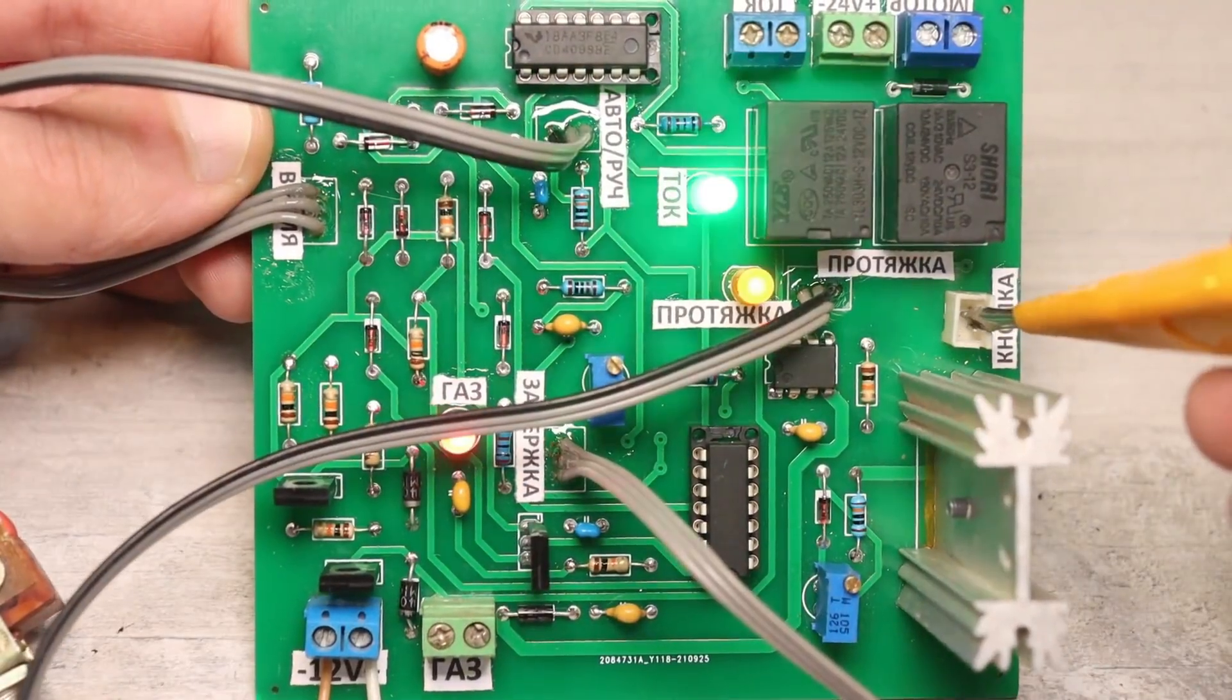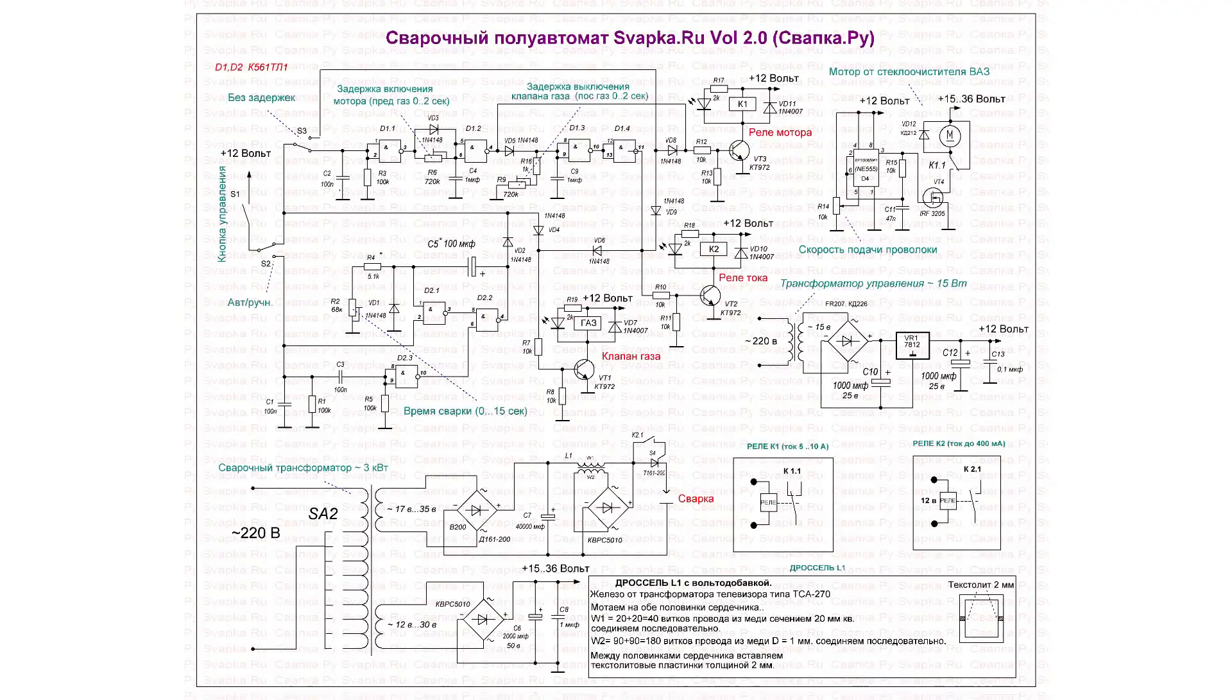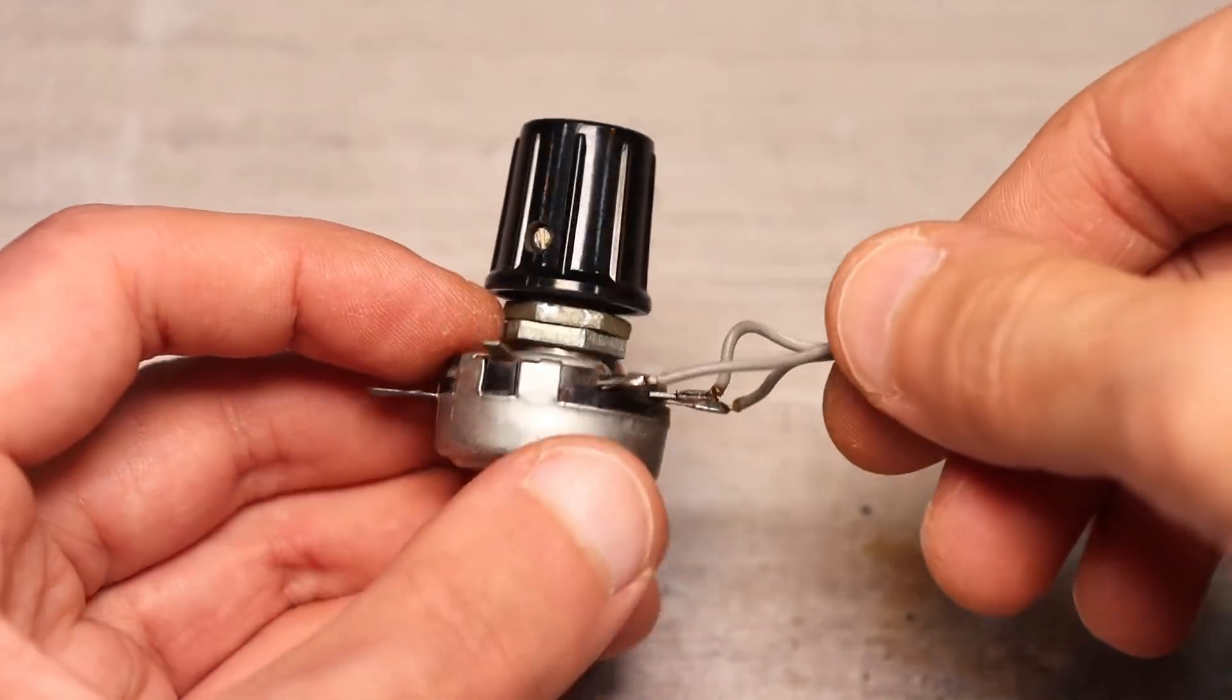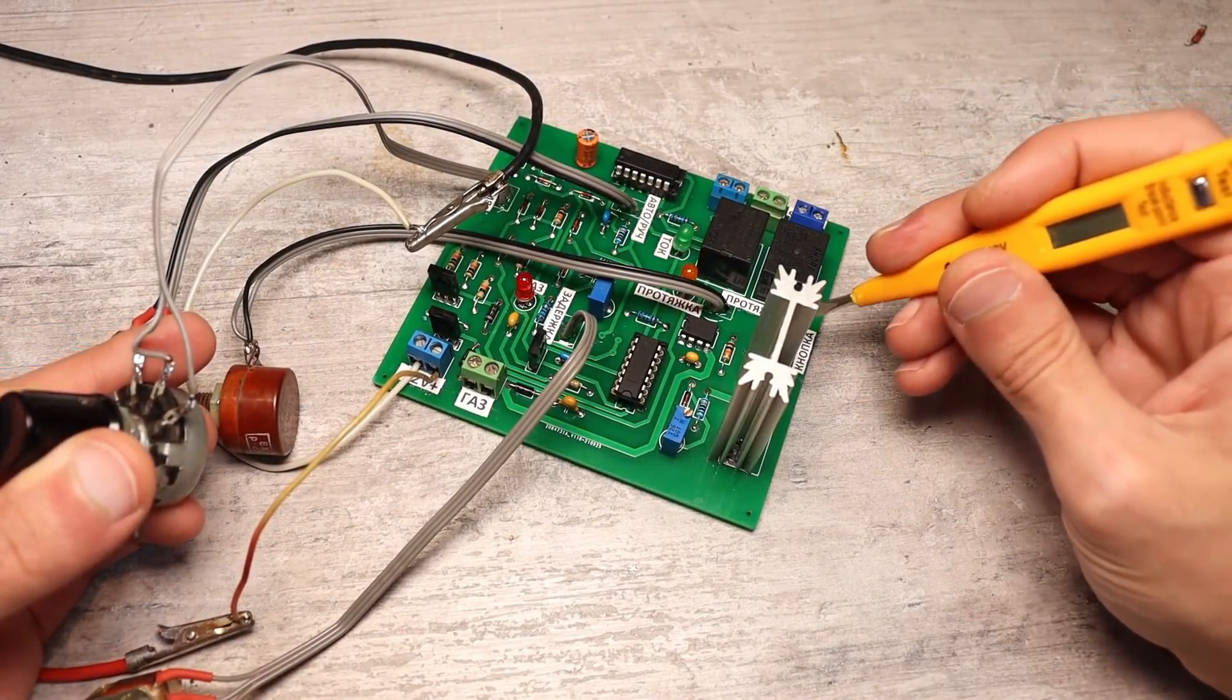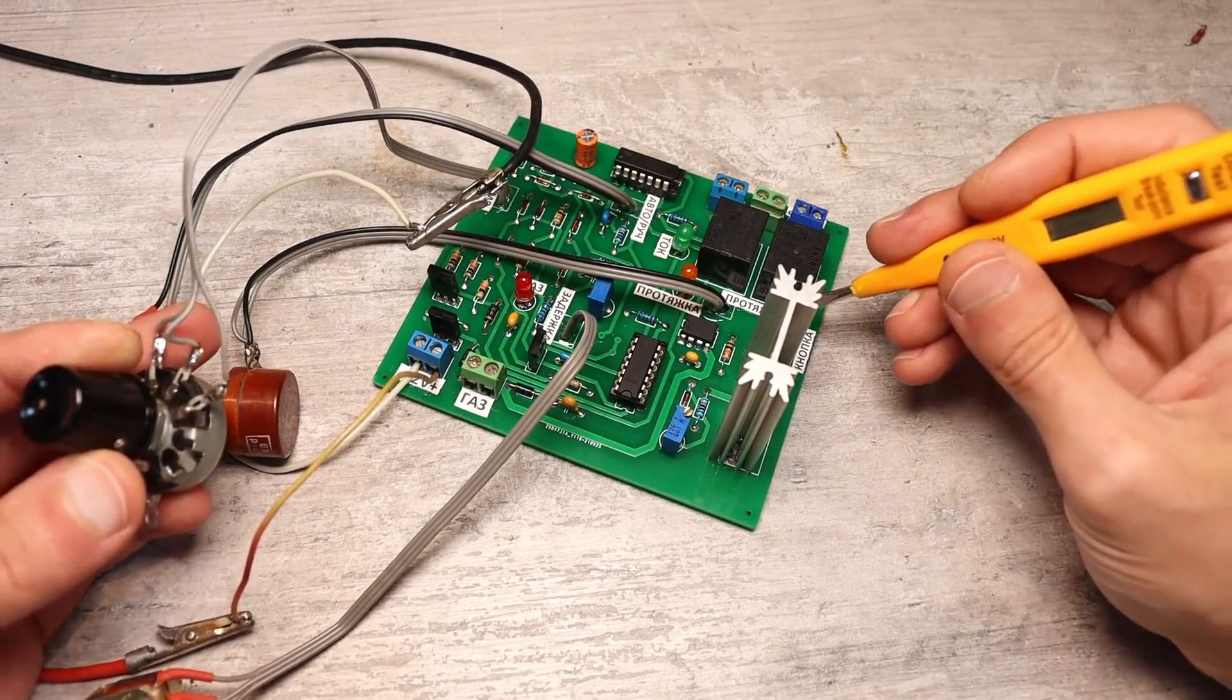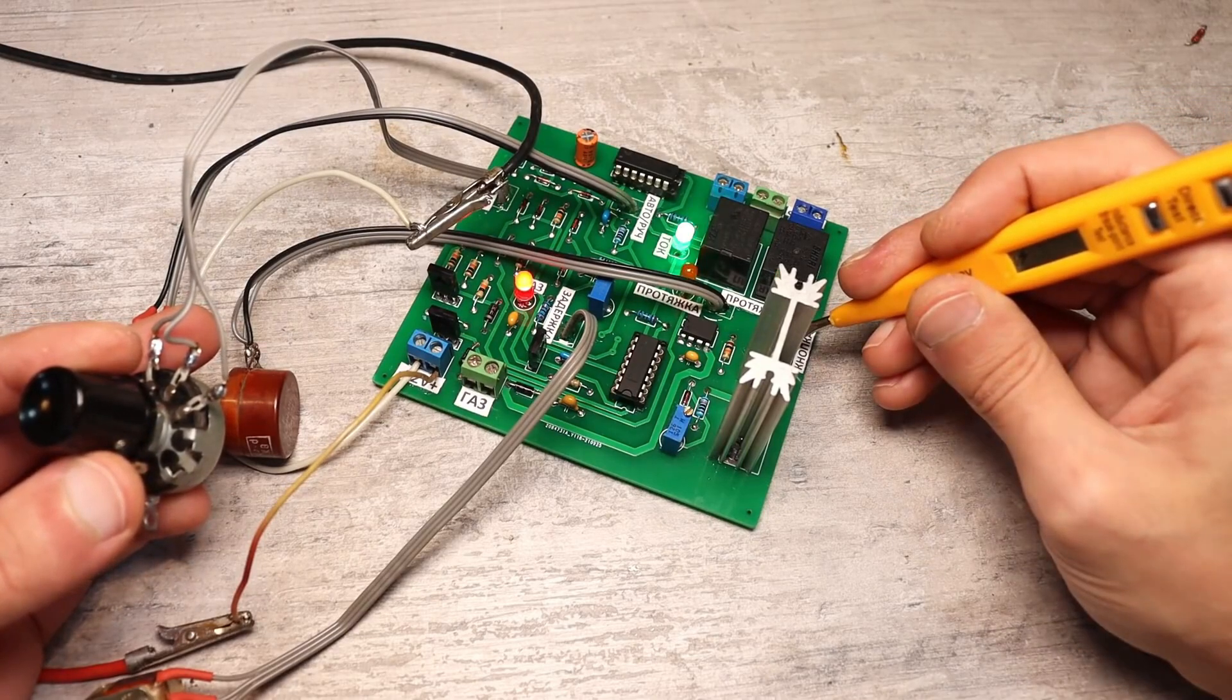In the manual mode, welding occurs when you press the button and stops when you release it. In the automatic mode, there is a regulator that sets the welding time. It can be adjusted from 0 to 15 seconds. When you press the button, the welding current is supplied for a set time, then everything turns off, regardless of how long you hold the button.